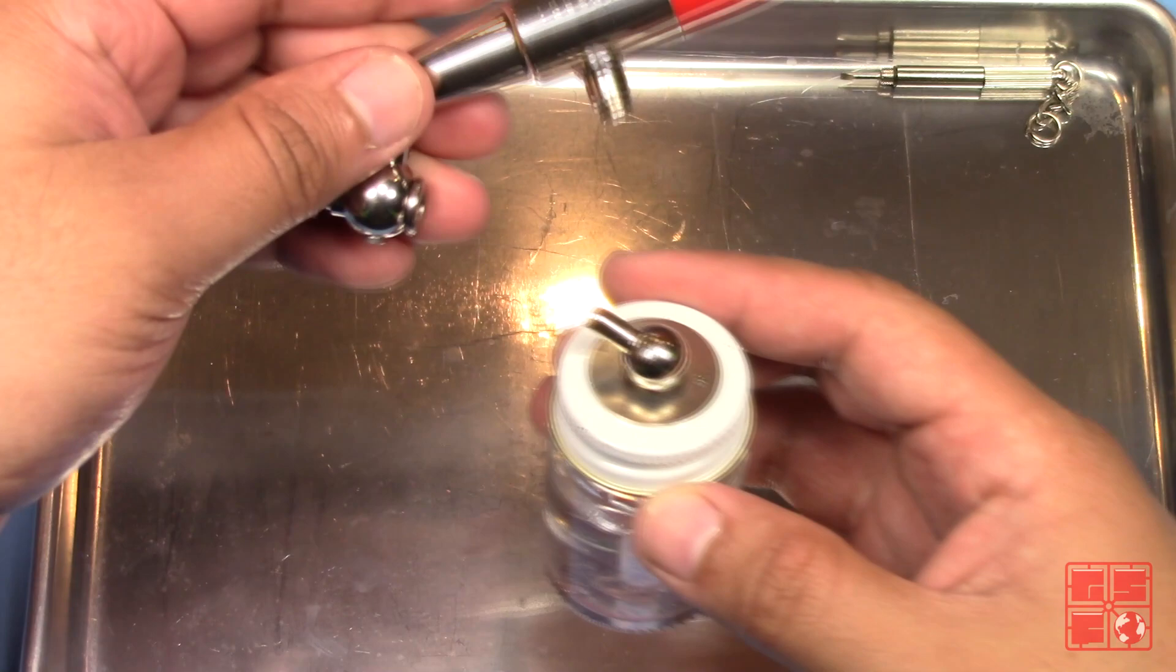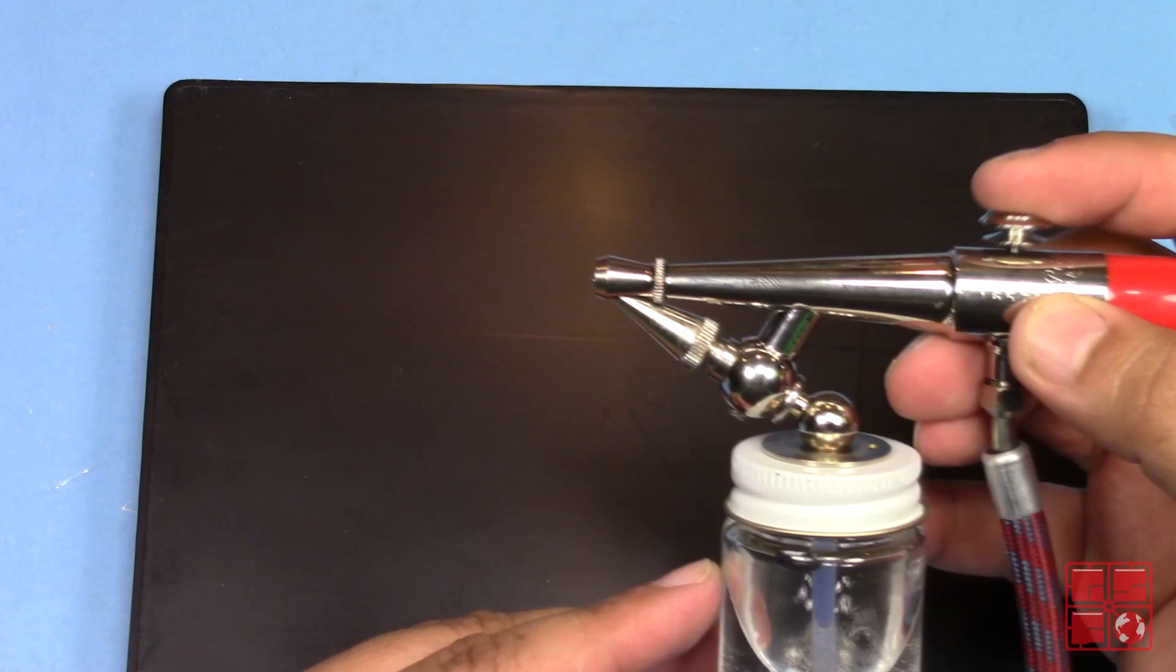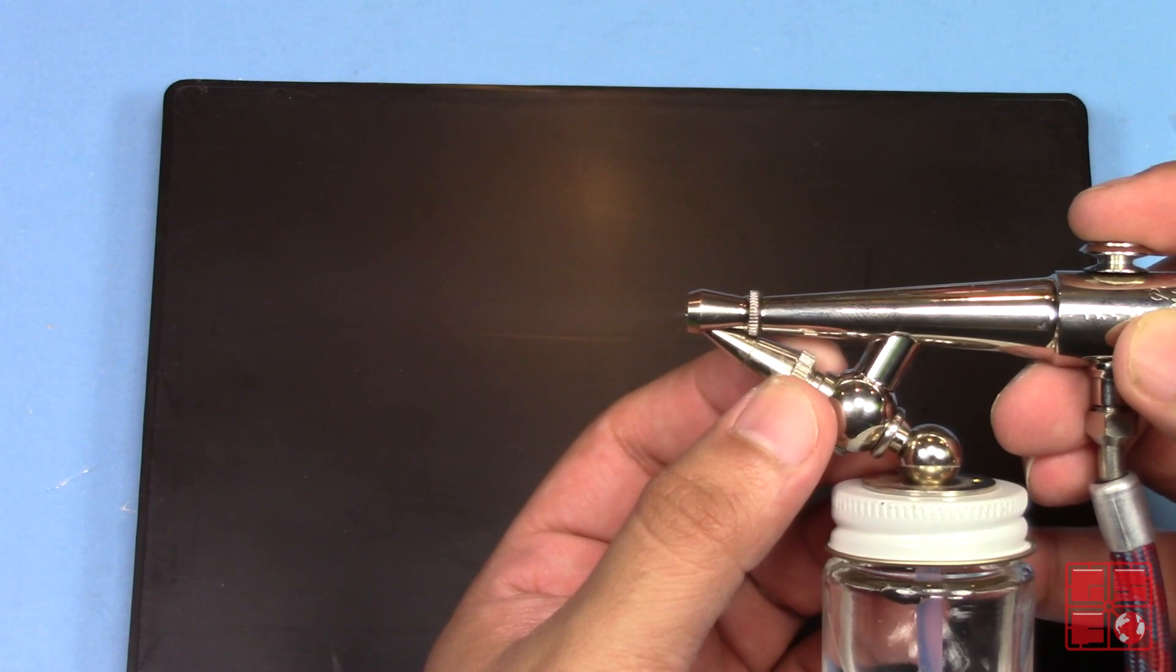Now, to test the airbrush using some alcohol. The spray pattern looks great, and the adjustment is working smoothly and properly now.